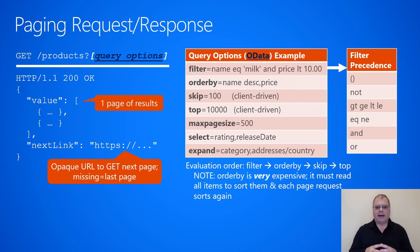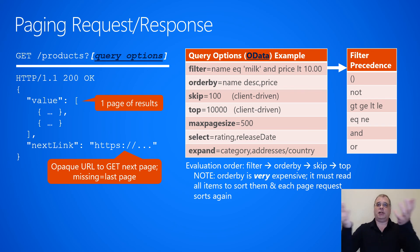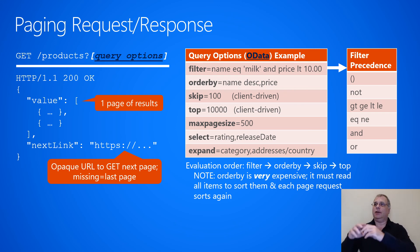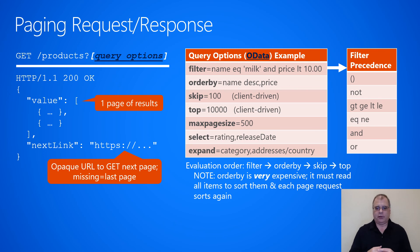One final note: the order by operation is very expensive for a service to implement, because to sort everything you have to load the entire collection into memory. If the collection is very large, this is costly — and if the client then requests the next page and hits a different node through a load balancer, that node may have to reload and re-sort the entire collection again. Because of this, many services do not support order by, as the resource cost required to run it is very high.